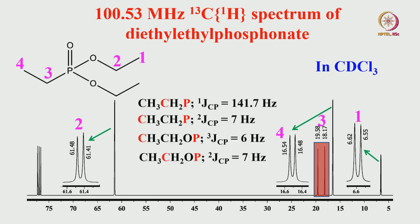We can measure the couplings. The one-bond carbon-phosphorus coupling is about 140 Hz. The two-bond coupling is about 7 Hz, three-bond is 6 Hz, and another two-bond to the other carbon is 7 Hz.